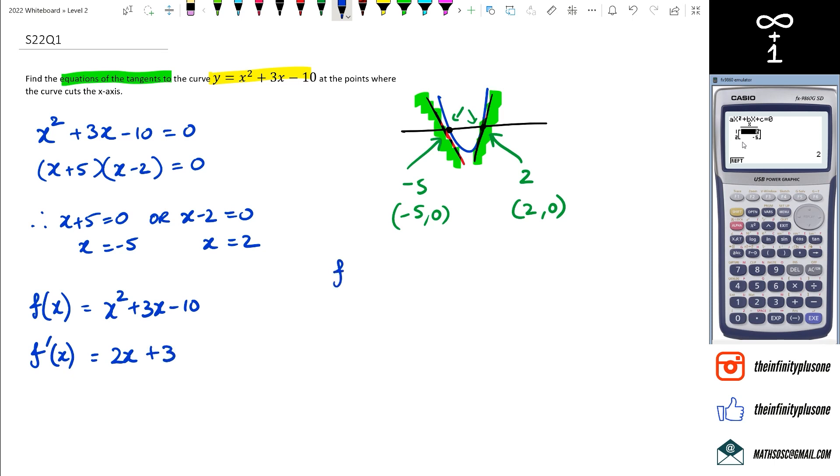So the next step is putting negative 5 in the gradient function. So 2 times negative 5 plus 3, that's going to give us negative 7. And then the gradient at 2 is 2 times 2 plus 3, which is going to give me positive 7. So the gradient function is this one right here, which is highlighted in blue. And all I've done here is I've actually substituted the x values into the gradient function. So that's going to give me those two gradients.